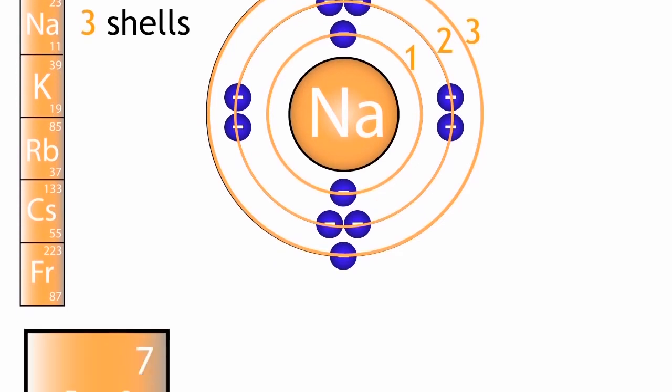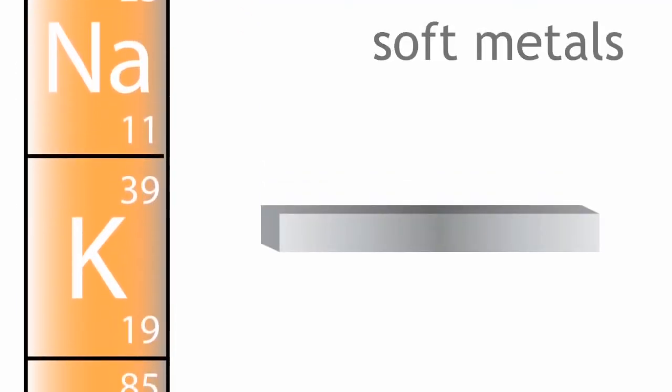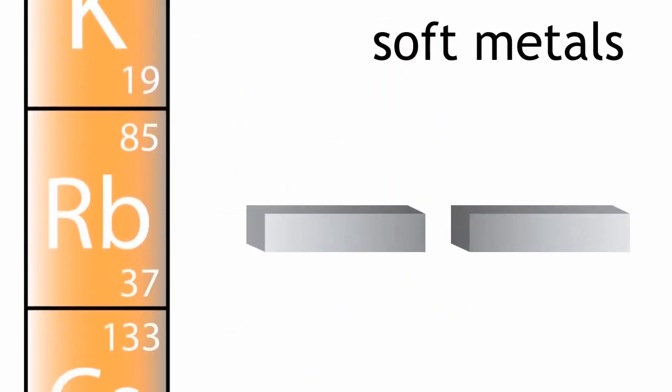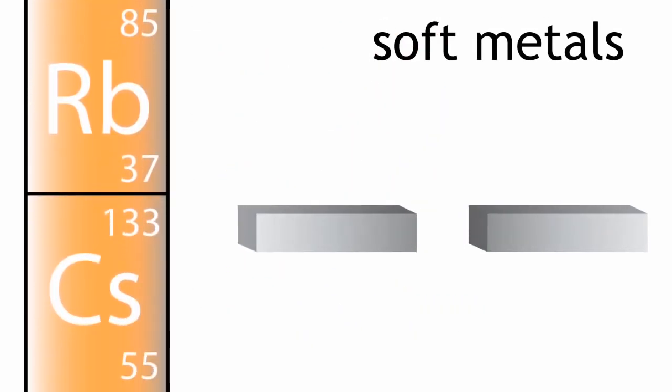The elements in the group are all metals. They are all soft metals which can be easily cut. They get softer as you go down the group. Not that you would be wise to try and cut rubidium and caesium.